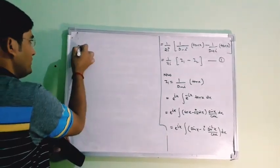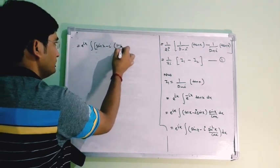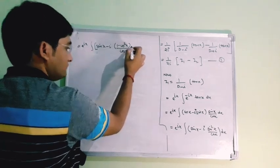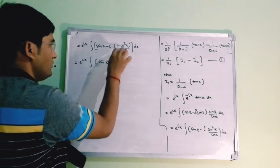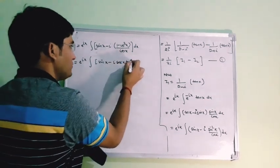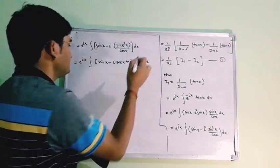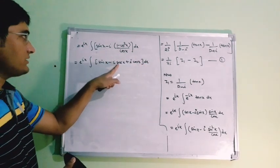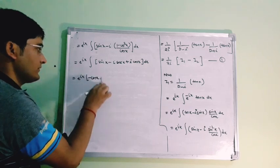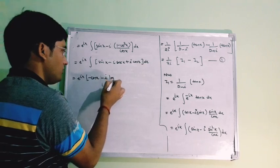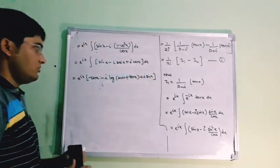Continuing the integration: inside the bracket we have sin(x) − i·sec(x) + i·cos(x). Integrating term by term: integration of sin(x) is −cos(x), integration of sec(x) is log|sec(x) + tan(x)|, and integration of cos(x) is sin(x). So I₁ = e^(ix)[−cos(x) − i·log|sec(x)+tan(x)| + i·sin(x)]. We do not write a constant of integration since we already have two constants in the complementary function.